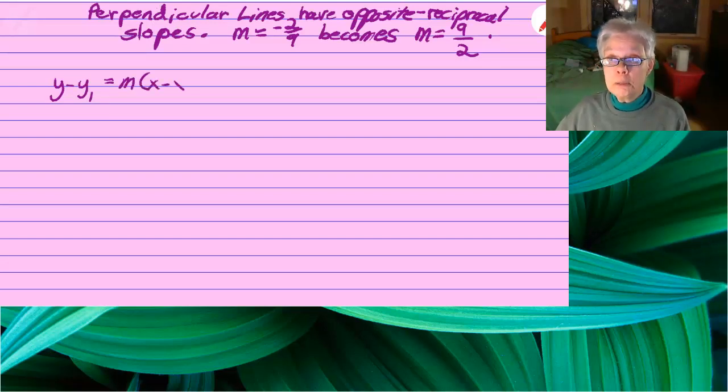I use the point slope formula. Again, you could always use y equals mx plus b. y minus negative 9 equals 9 halves or 9 over 2 times x minus 6.